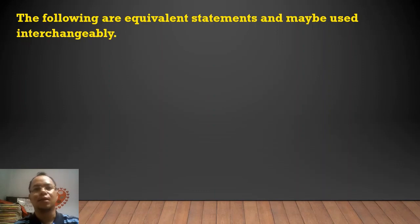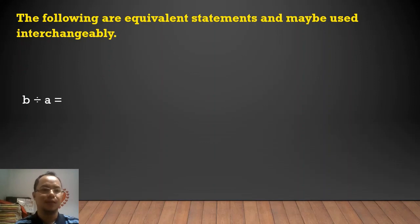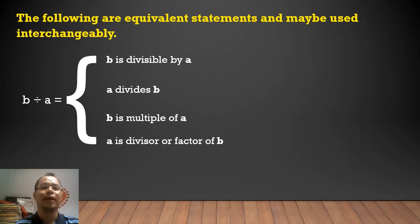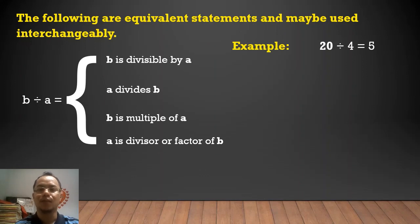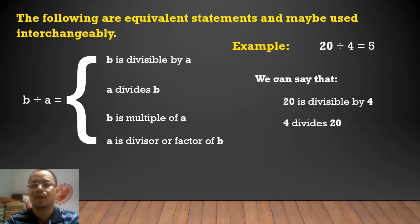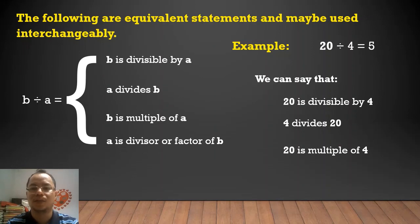The following are equivalent statements and may be used interchangeably: B is divisible by A, or A divides B, or B is a multiple of A, or A is a divisor or factor of B. For example, with 20 divided by 4: we can say 20 is divisible by 4, or 4 divides 20, or 20 is a multiple of 4, or 4 is a divisor of 20.